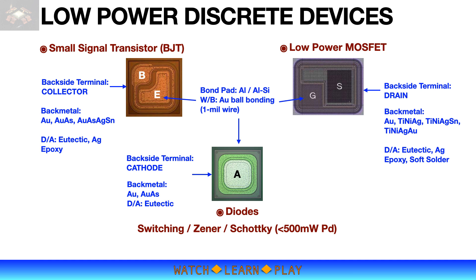Bipolar junction transistor, or BJT, is a three-terminal device. The top side of the silicon chip has two terminals, the base and the emitter. These are aluminum bond pads suitable for wire bonding process. For most devices, the back side of the silicon chip is a metalized gold layer, while some have additional layers of other metals to improve device performance.